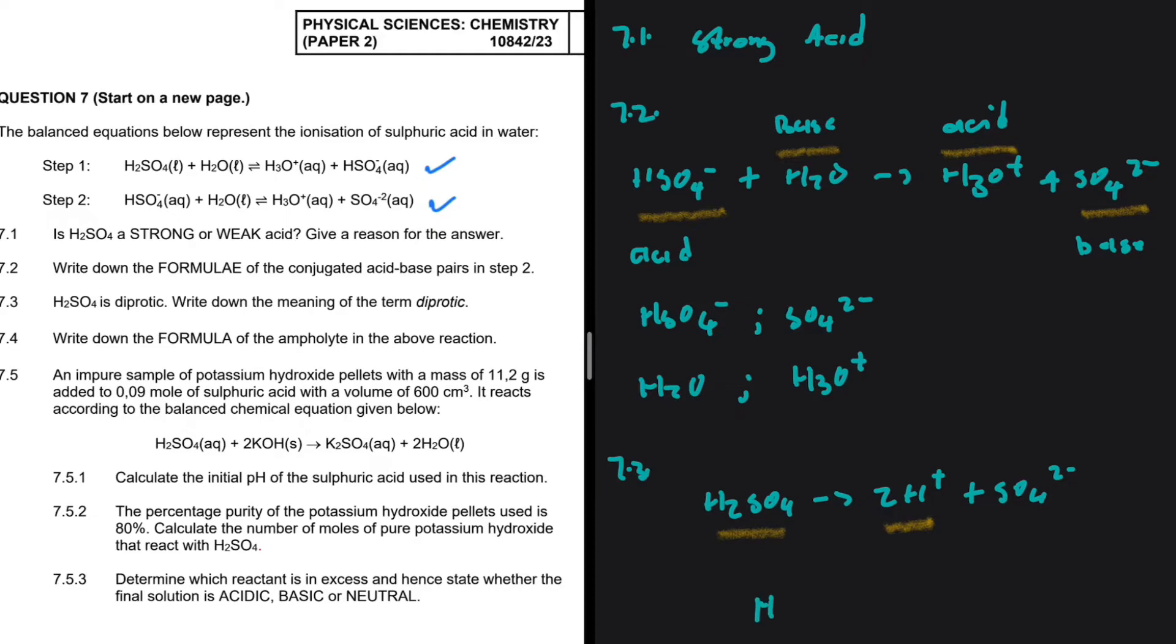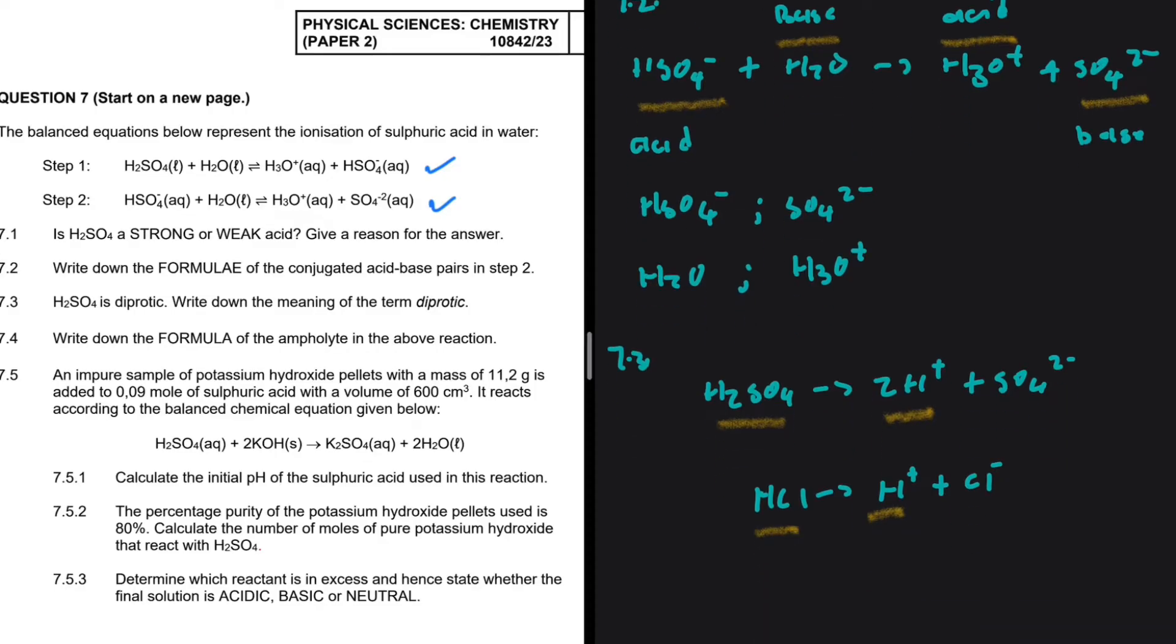For instance, HCl that can only donate 1 proton would be called monoprotic. Because for one HCl, we have 1H plus. But with H2SO4, clearly we have 2H plus. So we refer to it as being diprotic. That is 7.3.